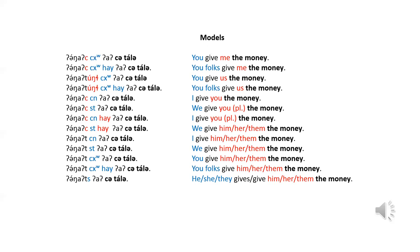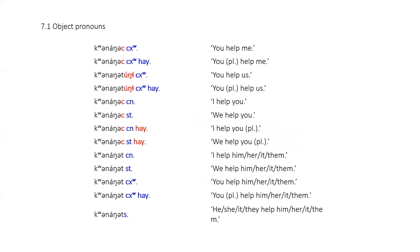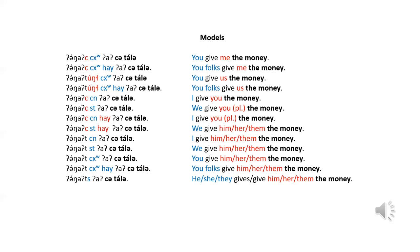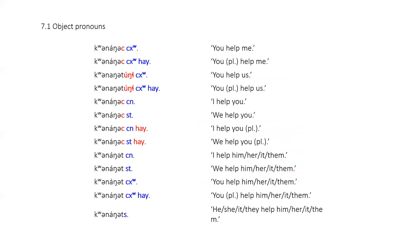If you compare this set of models with the one in the object pronouns video, notice that the objects and subjects are the same, and the verb 'unmet' works just like the verb 'help.' There is one important difference: in this role of the object suffix — with 'quinone' the object suffix marks the patient, the one undergoing the action — but with 'unmet,' the role of the object suffix is the recipient.